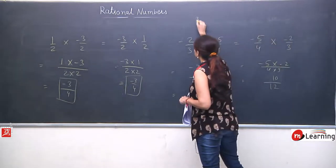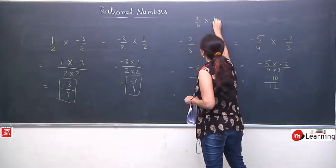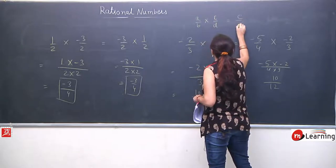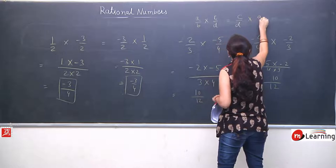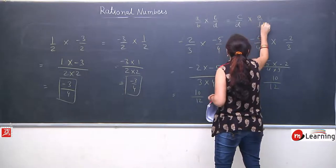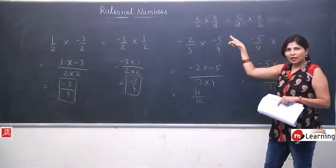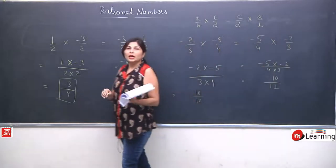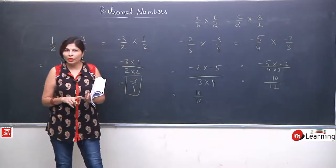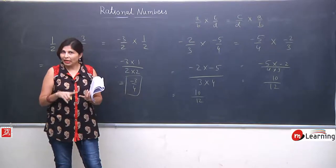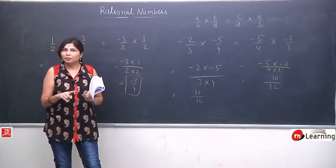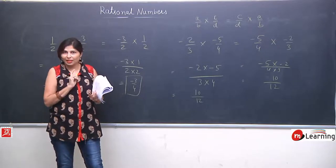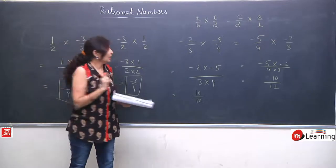In short, for two rational numbers a/b and c/d, we can write a/b × c/d = c/d × a/b. The conclusion is: rational numbers follow commutative law for addition and multiplication, but not for subtraction. Minus ke liye applicable nahi hai.